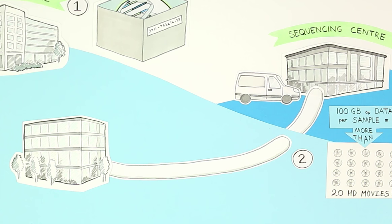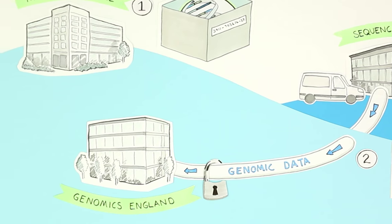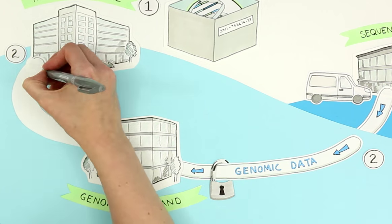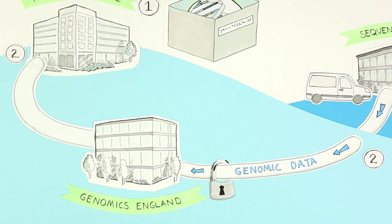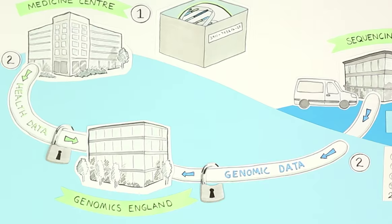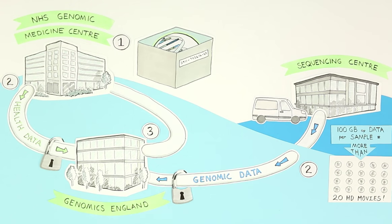When they've analysed your samples, your DNA data is sent to us at Genomics England. Your hospital then sends us detailed information about your condition, your health data, through the secure NHS network. We analyse both together and send a report back to your hospital care team.